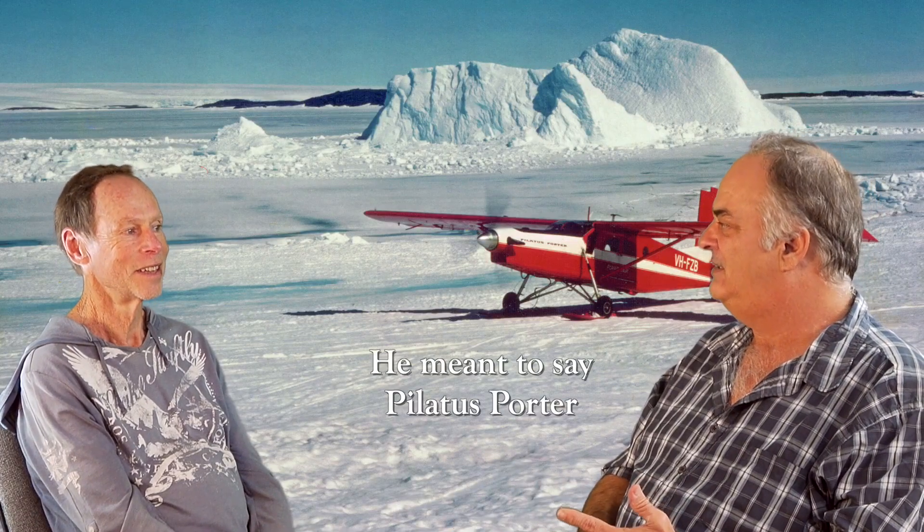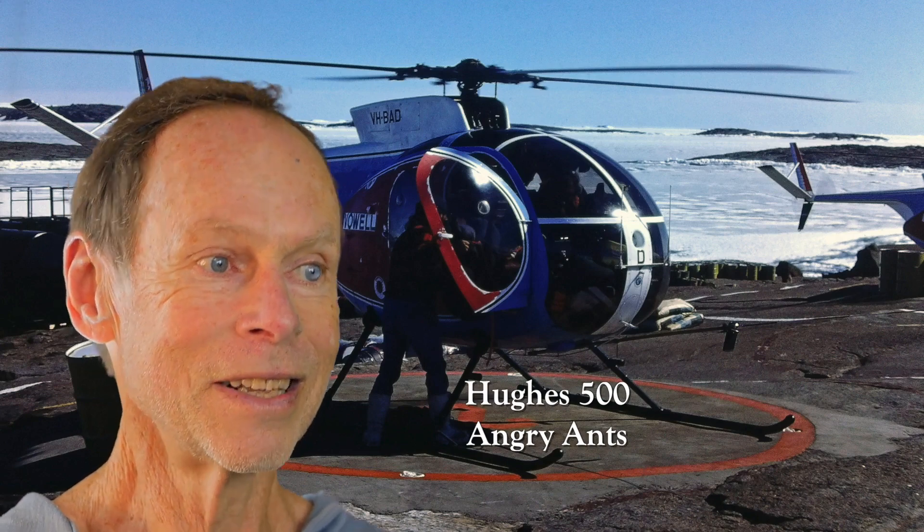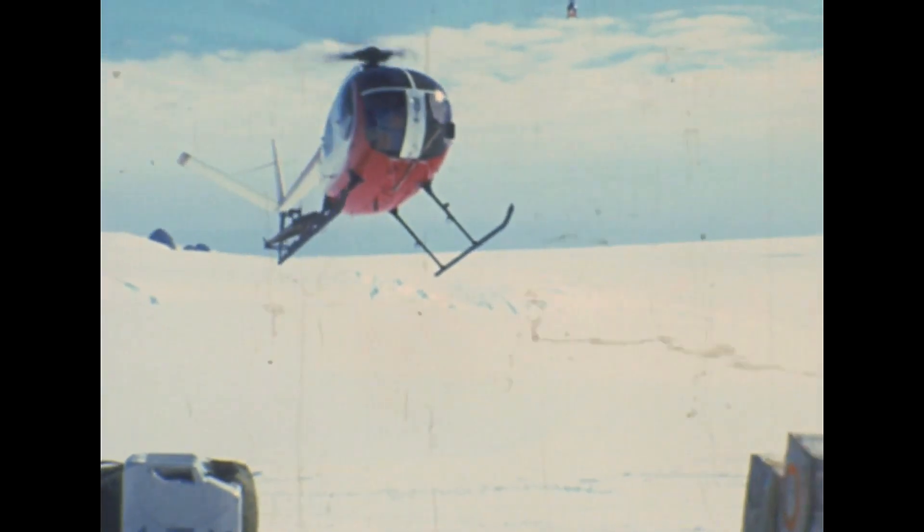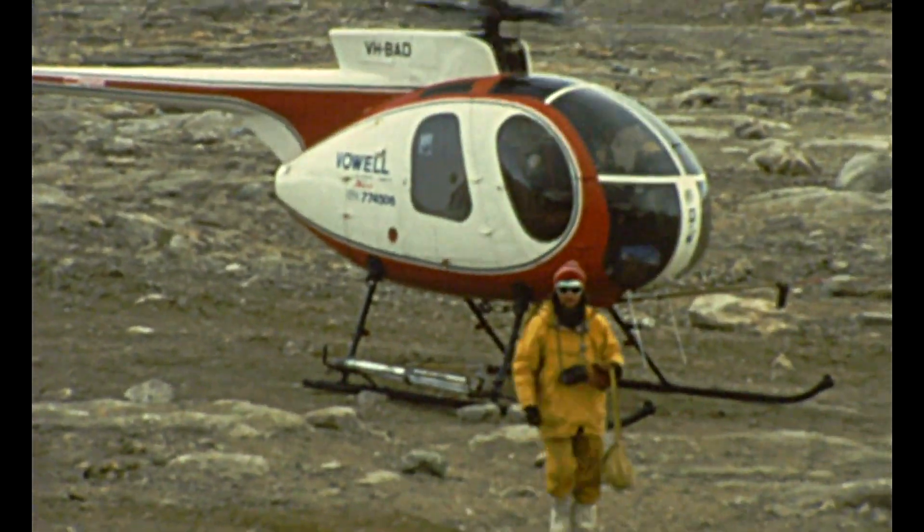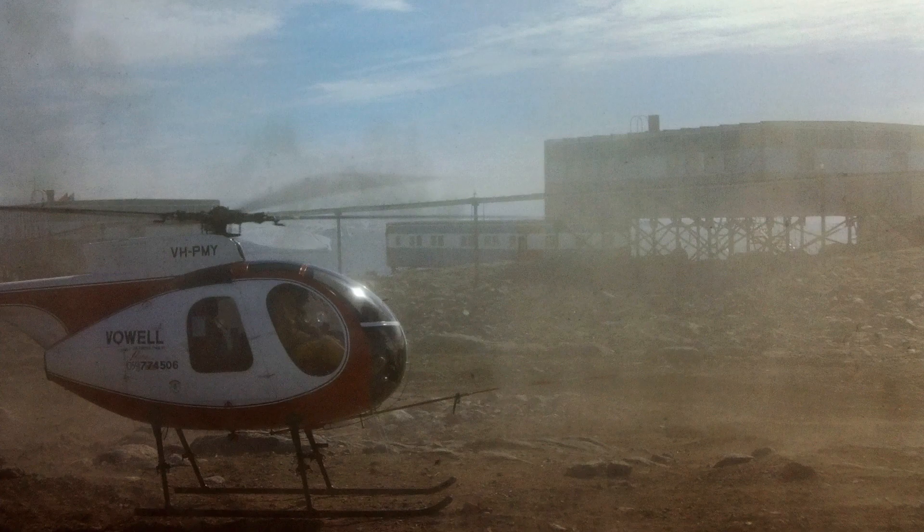Because you've only got choppers and Pilatus Porters, which is like a six-seater or something like that, isn't it? Six or seven, eight-seater. Because the image you get when you're reading is this flying operation with two helicopters and a plane, something out of Apocalypse Now. It's hard to get Apocalypse Now when you're in Hughes 500s. They're pretty fast. We used to call them angry ants.